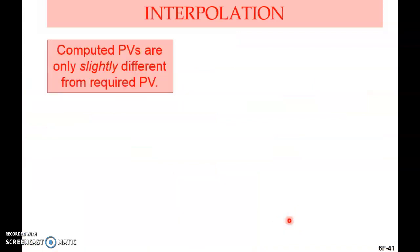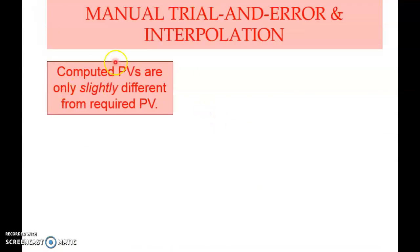When the computed present values are only slightly different from the required present value, this is when you use interpolation. Sometimes the trial and error method can be very tedious — you could keep going and never get the exact rate. Trial and error can give an exact rate if you continue long enough and get very close to the actual rate.